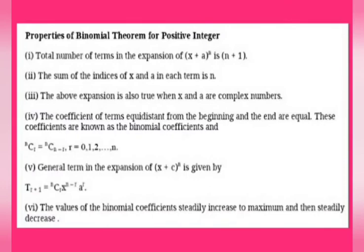The sixth property: the values of binomial coefficients separately increase to a maximum and then steadily decrease. Also, when x equals 1 and a equals 1, you get 1 plus 1 power n, that is 2 power n. So the sum of the coefficients will be equal to 2 power n. These are the main properties of the binomial theorem for positive integer, and with the help of these properties we can solve many problems.